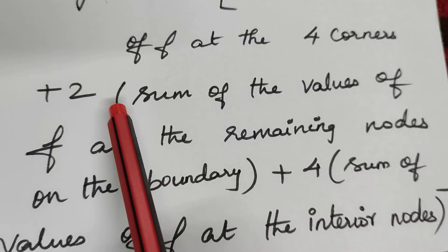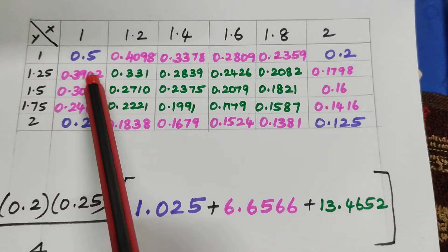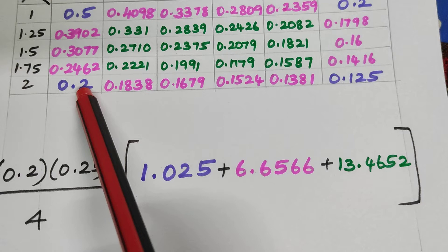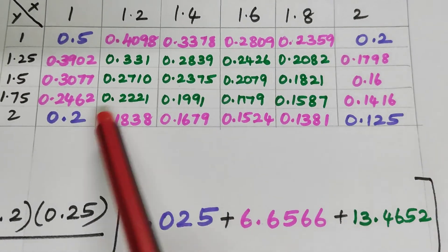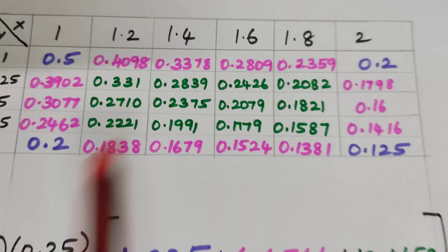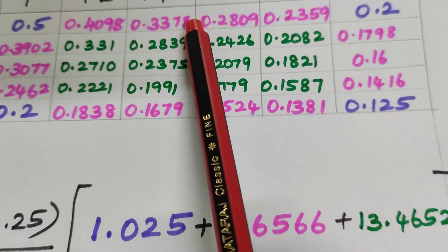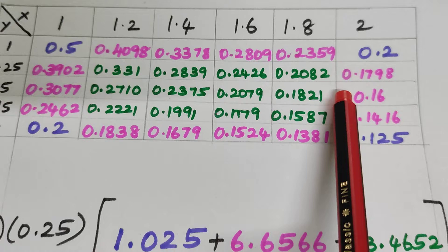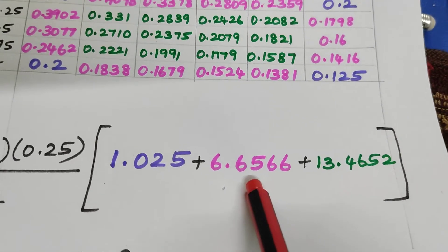Coming to the formula again: twice the sum of the values of F at the remaining nodes on the boundary. This is the boundary. Already in the boundary you have taken the corner values. Now, what are the remaining elements in the boundary? I have colored in pink color. Adding all these pink values: 0.4098 plus 0.3378, 0.2809, 0.2359 and all these pink values will result in 6.6566. This value I have marked in pink color.